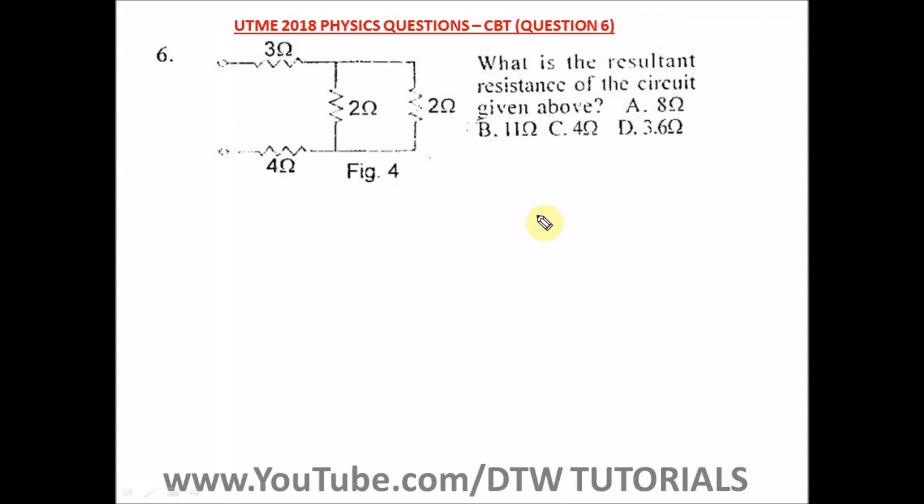Question six of the UTME 2018 Physics past question. It says what is the resultant resistance of the circuit given above? We have to find the resultant resistance.